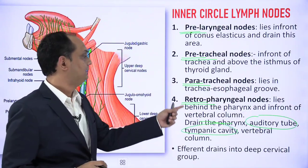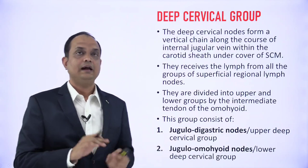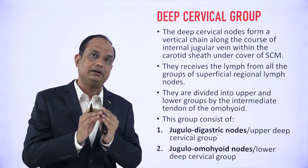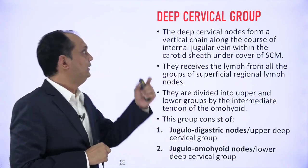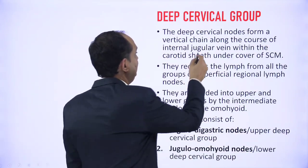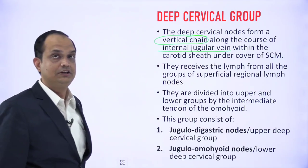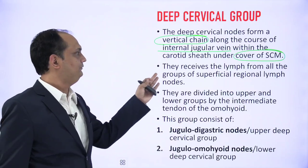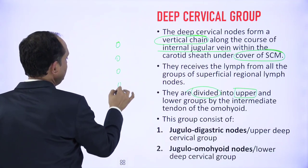This completes the superficial group — with the outer chain of regional lymph nodes and the inner chain around the upper end of the respiratory and alimentary system. The deep group lymph nodes are present around the internal jugular vein, embedded in the carotid sheath, arranged as a vertical chain deep to the sternocleidomastoid muscle. They receive lymph from all the superficial groups and are divided into upper and lower parts.